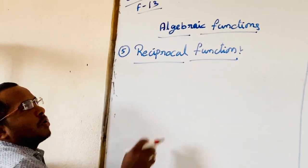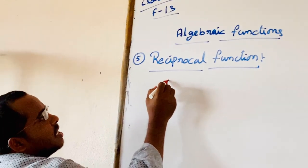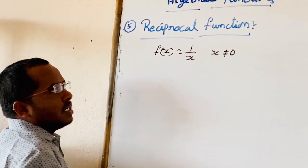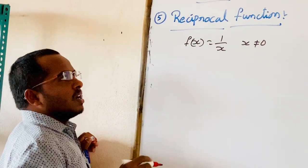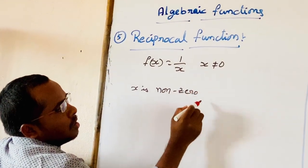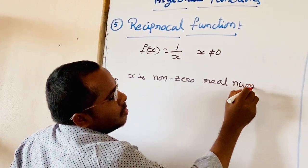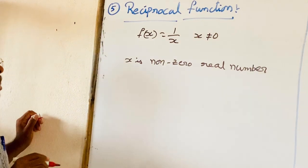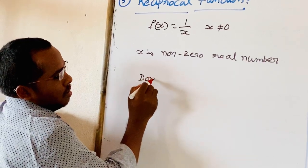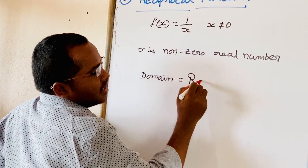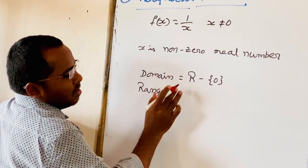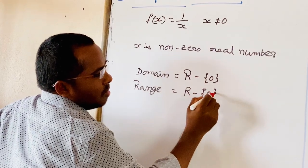The first one is reciprocal function. A function f of x is equal to 1 by x, where x is not equal to 0, is called a reciprocal function. Here the domain of this reciprocal function is real numbers except 0, and the range of this function is also real numbers except 0.